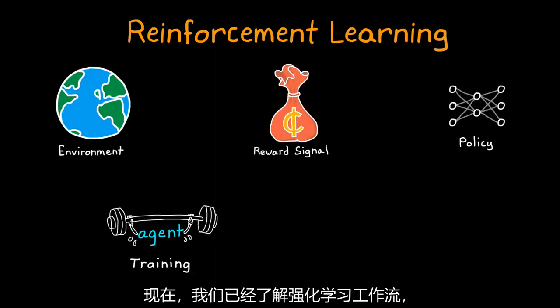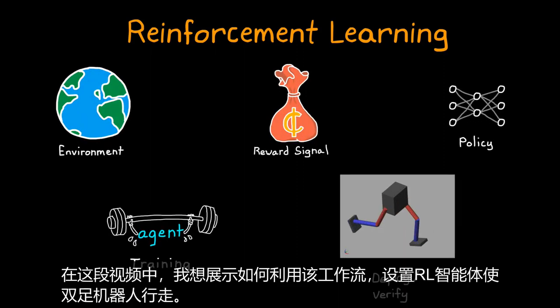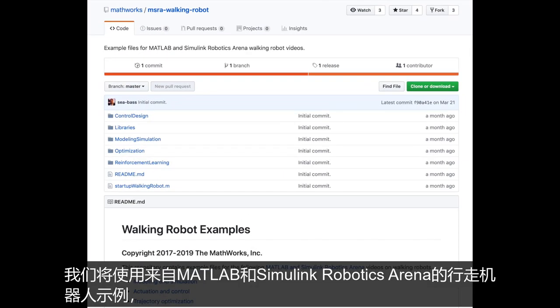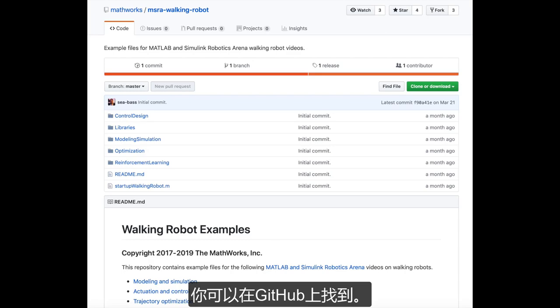Now that we have an understanding of the reinforcement learning workflow, in this video I want to show how that workflow is put to use in getting a bipedal robot to walk using an RL equipped agent. We're going to use the walking robot example from the MATLAB and Simulink Robotics arena that you can find on GitHub. I've left a link to it in the description.